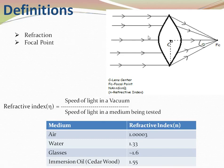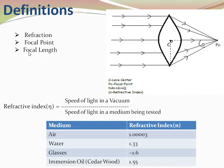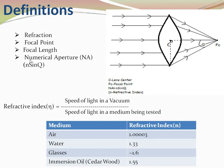Focal point: when parallel rays of light pass through a biconvex lens, the rays will focus at one particular point on the opposite plane. This point is the focal point. The distance between this focal point and the center of the lens is the focal length.